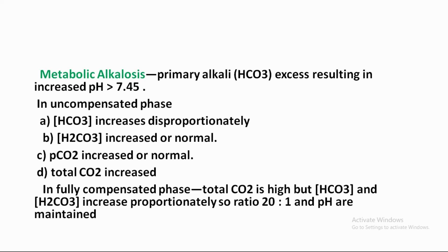Metabolic Alkalosis: what is the primary defect? The primary defect is increased bicarbonate. Bicarbonate level increases, and as a result pH rises above 7.45. When compensated, the partial pressure of carbon dioxide is initially normal, but compensation increases it.